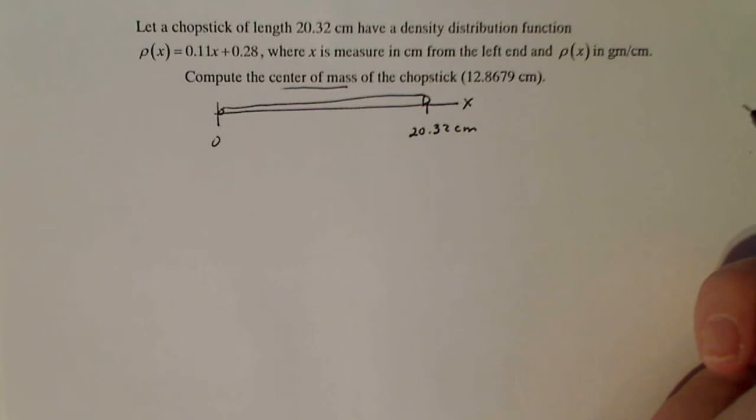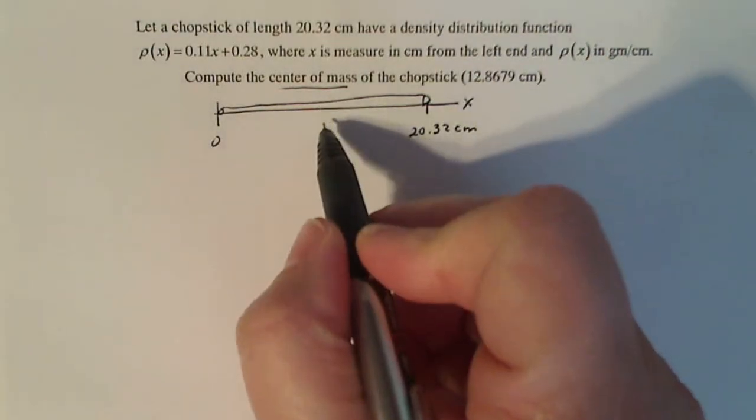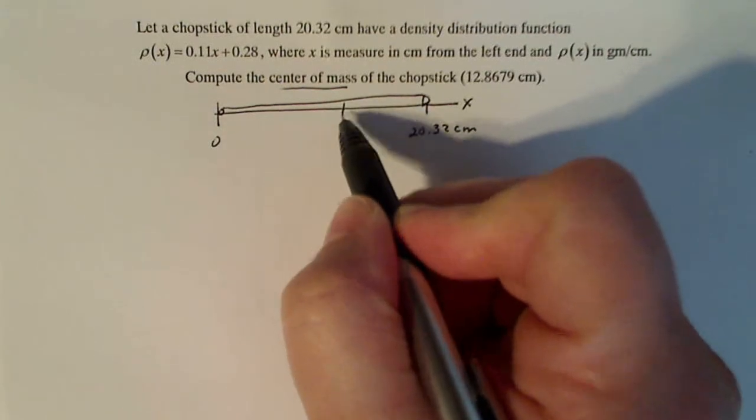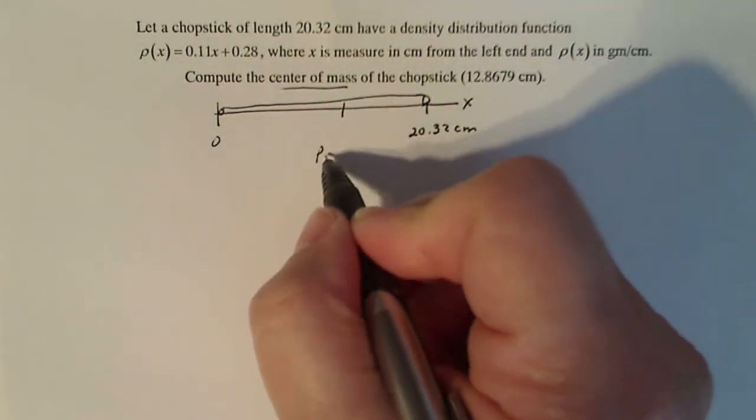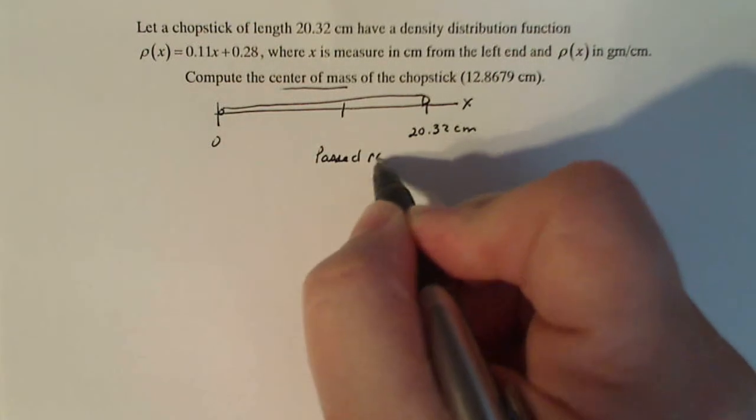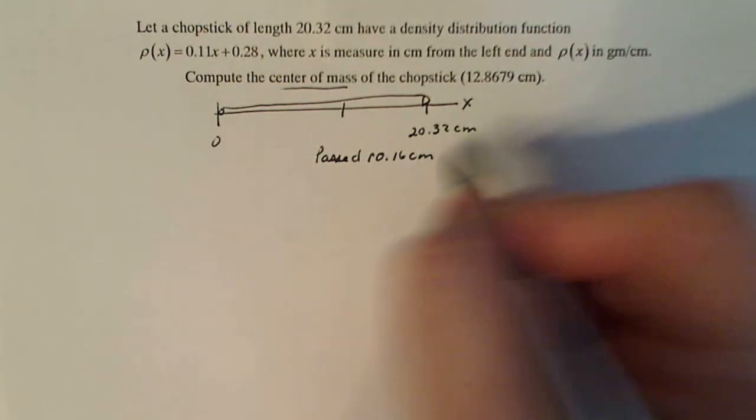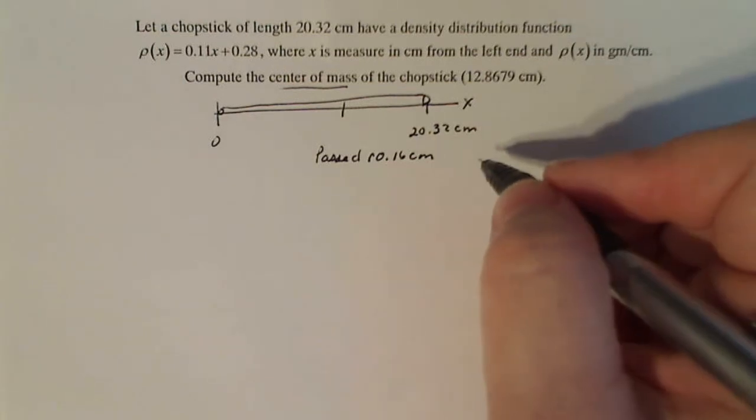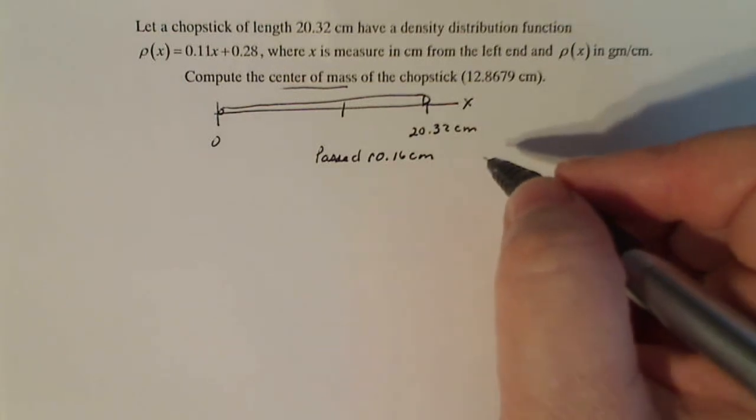Now if I want to guess my center of mass - if you took a chopstick and you balance it on your finger, that's what we're looking for. You don't expect it to be directly in the center at 10.16. You kind of expect it to be a little bit past that. So you want it to be past 10.16 centimeters. That's a good reference point to know if your answer is accurate.